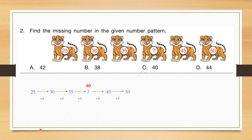Question number 2: Find the missing number in the given number pattern. The pattern is 25, plus 5, 30, plus 5, 35, plus 5, 40, plus 5, 45, plus 5, 50. Every time we add 5. So the correct answer is option C, 40.